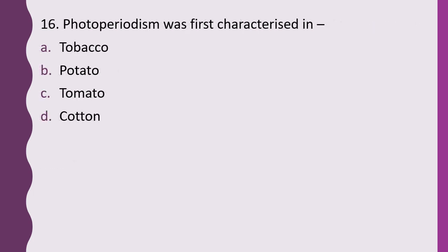Question 16. Photoperiodism was first characterized in: tobacco, potato, tomato, or cotton. The correct answer is option A, the tobacco plant.